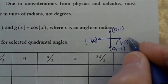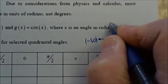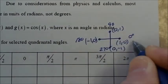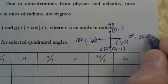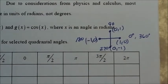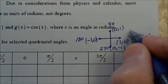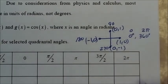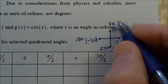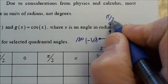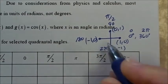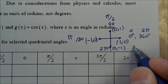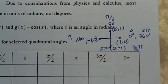Now we know their degree measures: 0, 90, 180, 270, and 360. For the radian measure: 0 radians or 2π radians; 90 degrees is equivalent to π/2 radians; 180 degrees is π radians; and 270 degrees is 3π/2 radians.